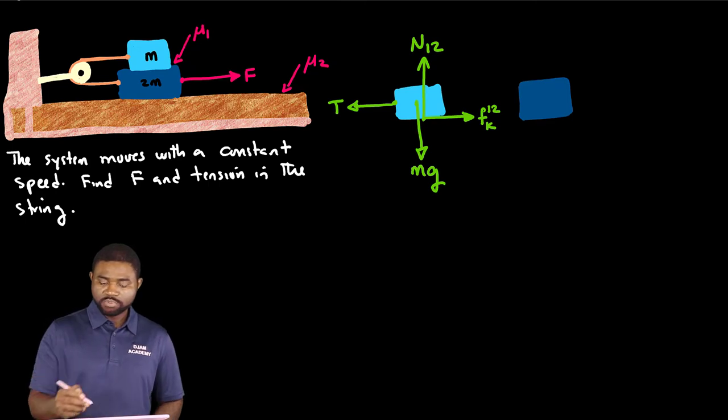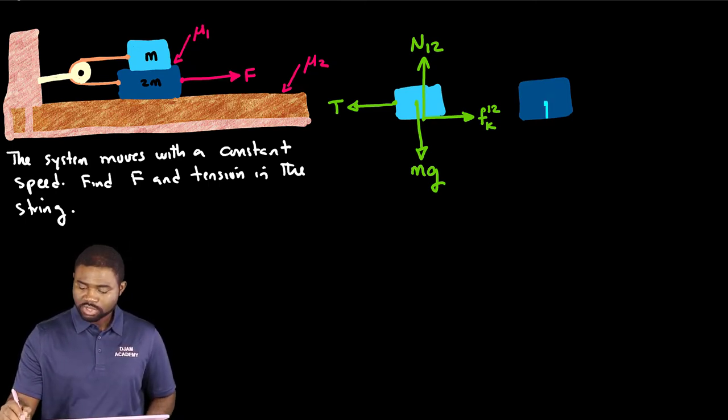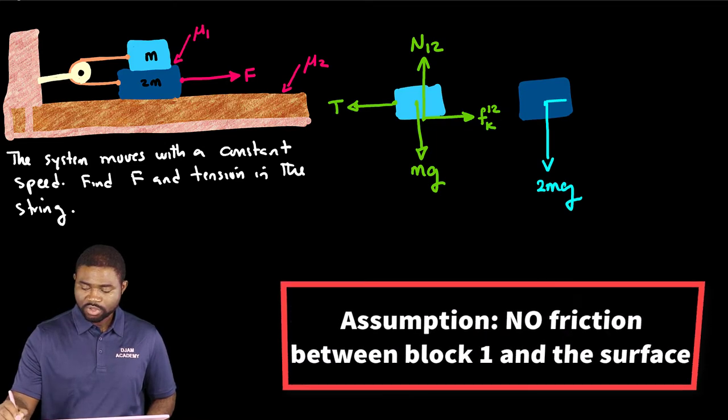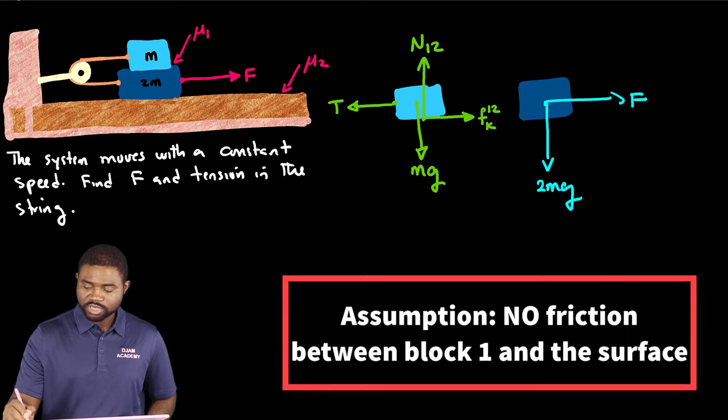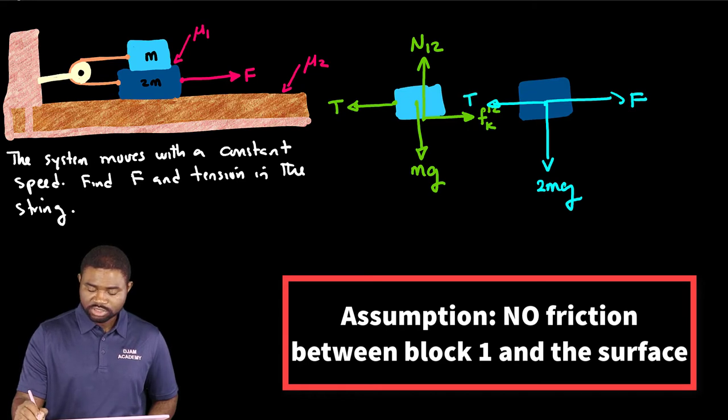Similarly for block two. You have the weight, this is 2mg. You have the constant force F. You have the tension T as well.